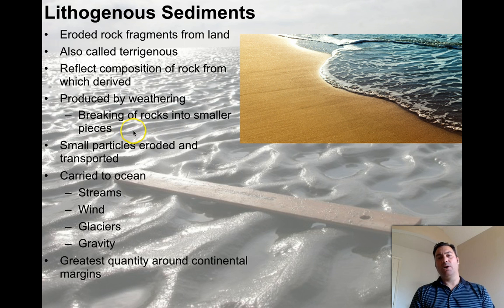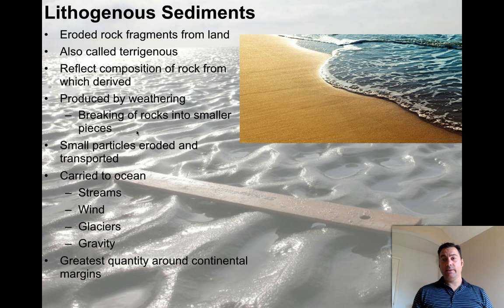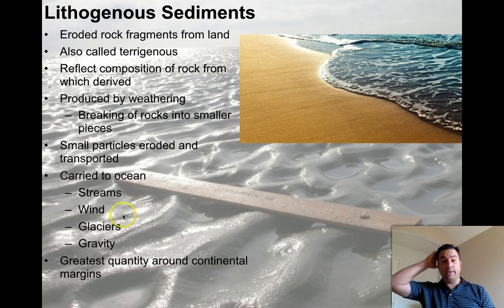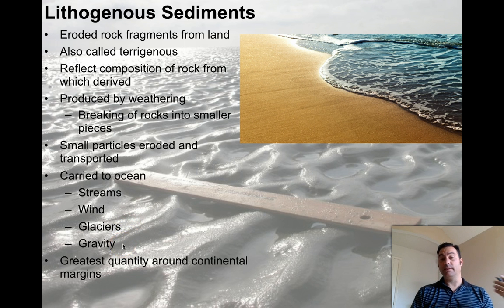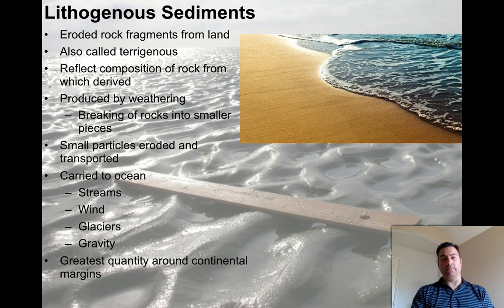Lithogenous sediments are produced by weathering — the breaking of rocks into smaller pieces. You take a big boulder — it doesn't matter if it's basalt or granite — and break it up by running water over it, throwing it in a river, a landslide, or wave action on the beach. Small particles get eroded and transported, eventually carried to the ocean through streams, wind, glaciers, and gravity through landslides. The greatest quantity is found around the continental margins, where there are big thick piles of lithogenous sediments.